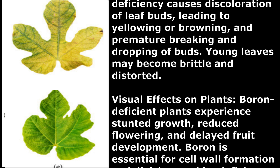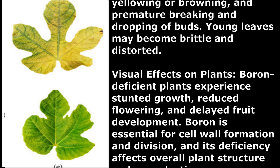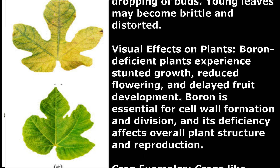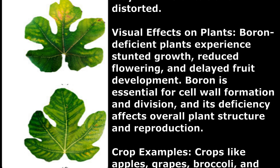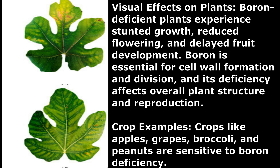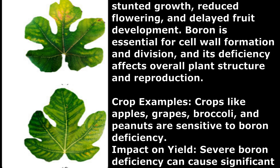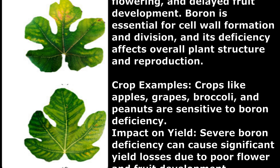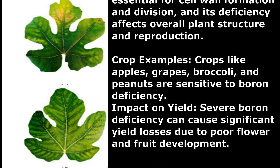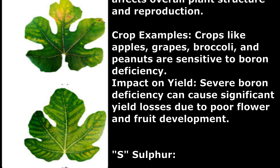Boron is essential for cell wall formation and division, and its deficiency affects overall plant structure and reproduction. Crop Examples: Crops like apples, grapes, broccoli, and peanuts are sensitive to boron deficiency. Impact on Yield: Severe boron deficiency can cause significant yield losses due to poor flower and fruit development.